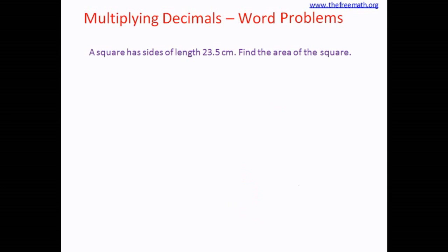What is the equation for calculating area of a square? Side multiplied by side, or side squared. So let's calculate the area. We have to multiply 23.5 by 23.5. Again, let's ignore the decimal point and multiply 235 by 235.